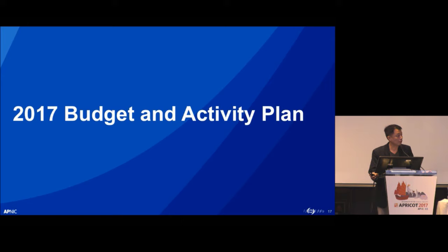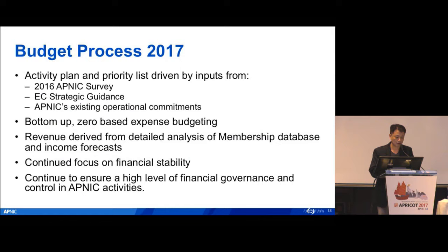The second part of the treasury report is the 2017 budget and activity plan. Our activity plan and priority was driven by inputs including the 2016 APNIC survey, which is a very important input to adjust our priorities. Also EC strategic guidance — the EC conducts a strategic plan every four years — and compliance with APNIC's existing operational commitments, such as internet governance.